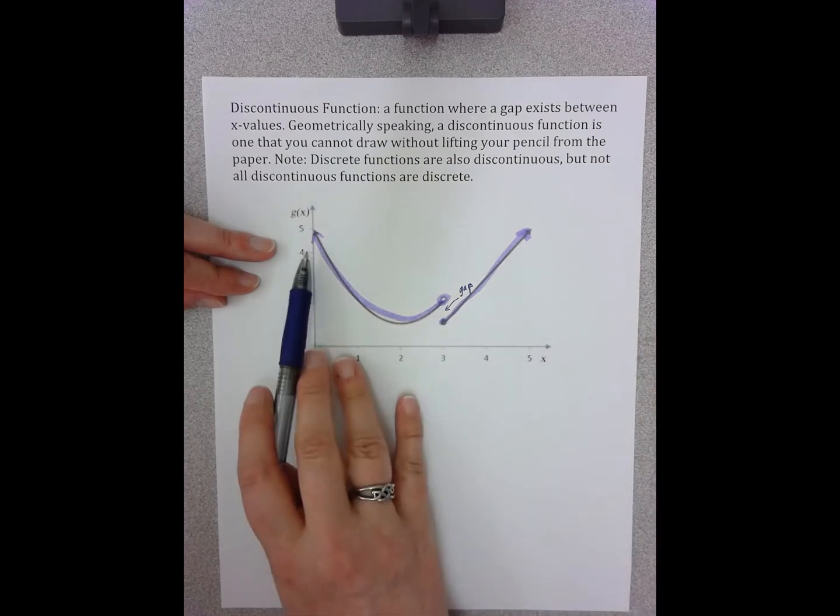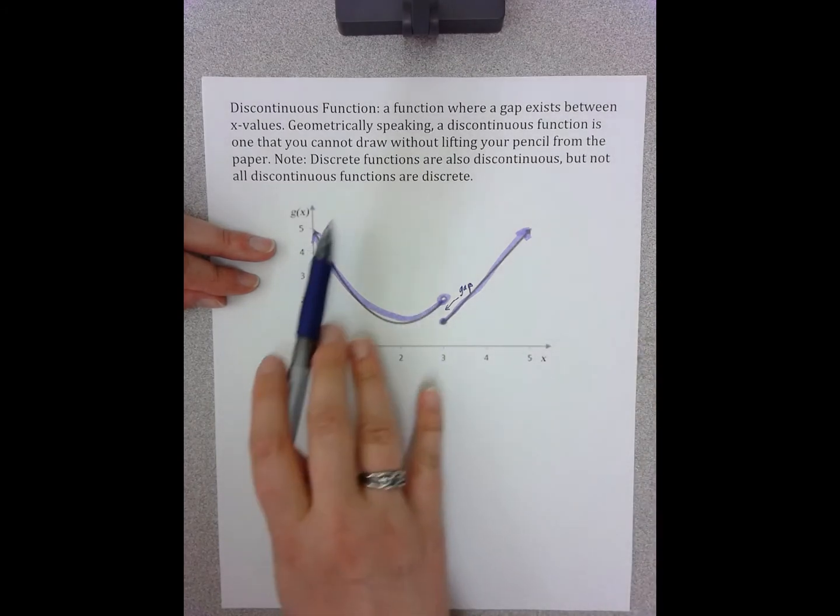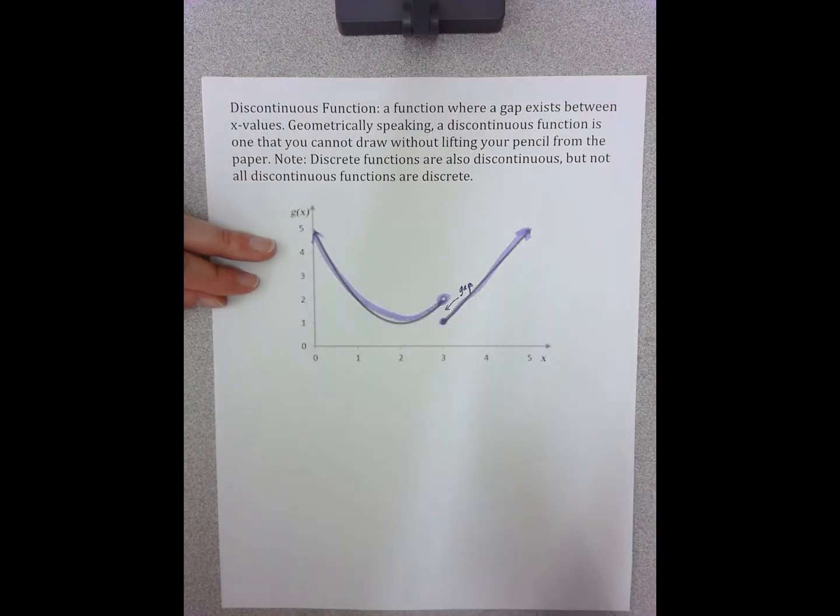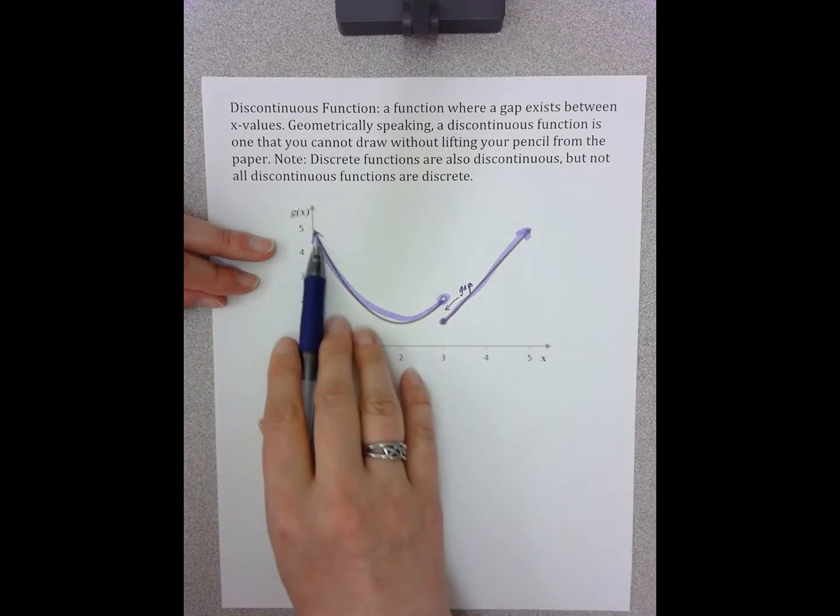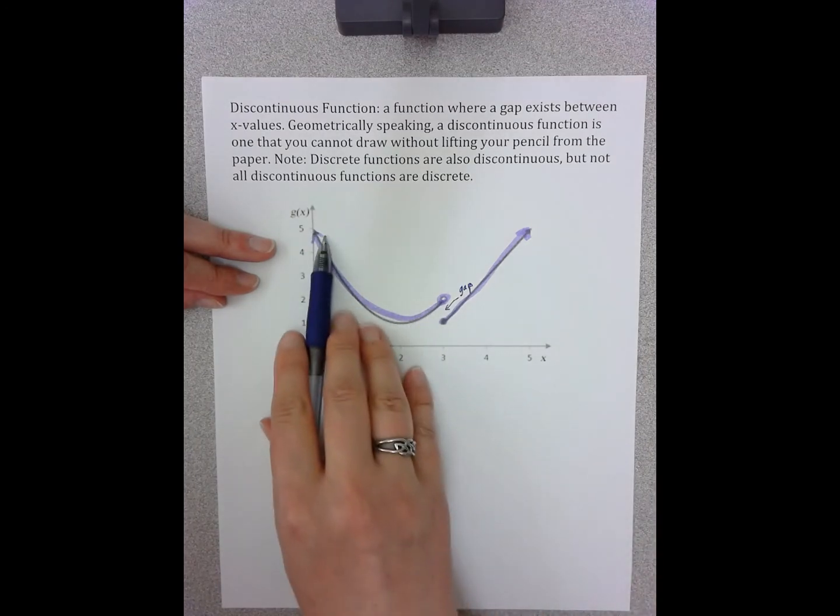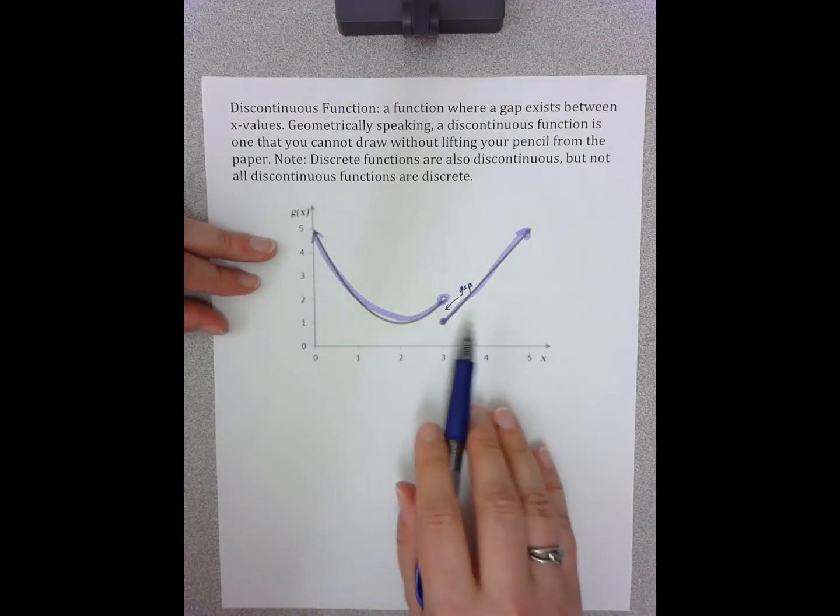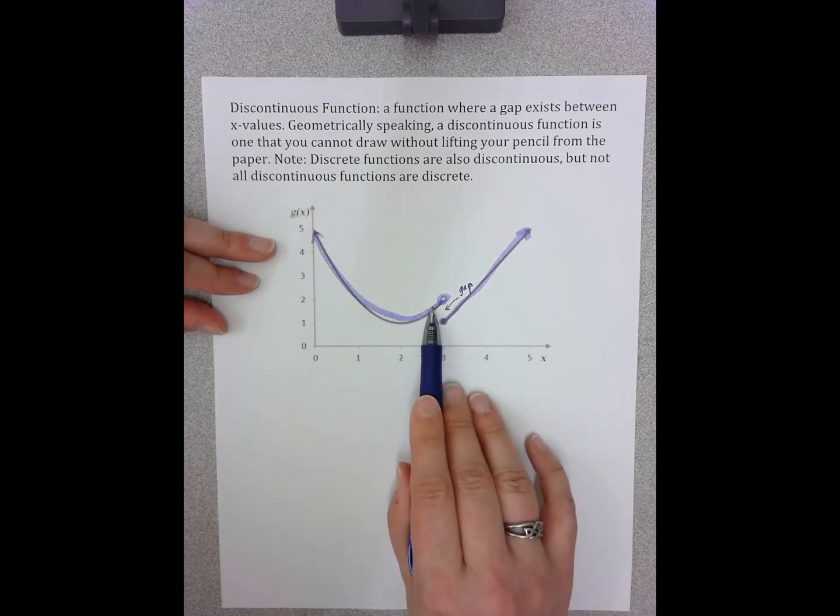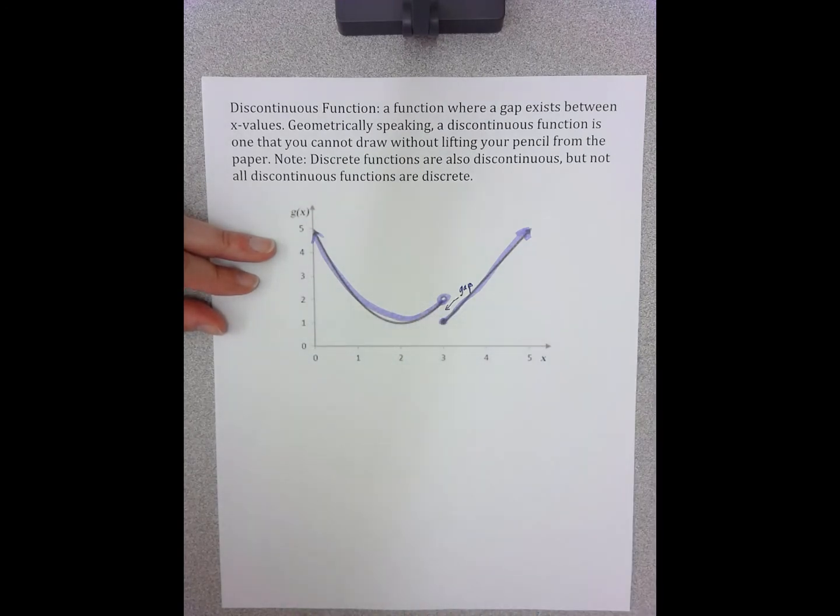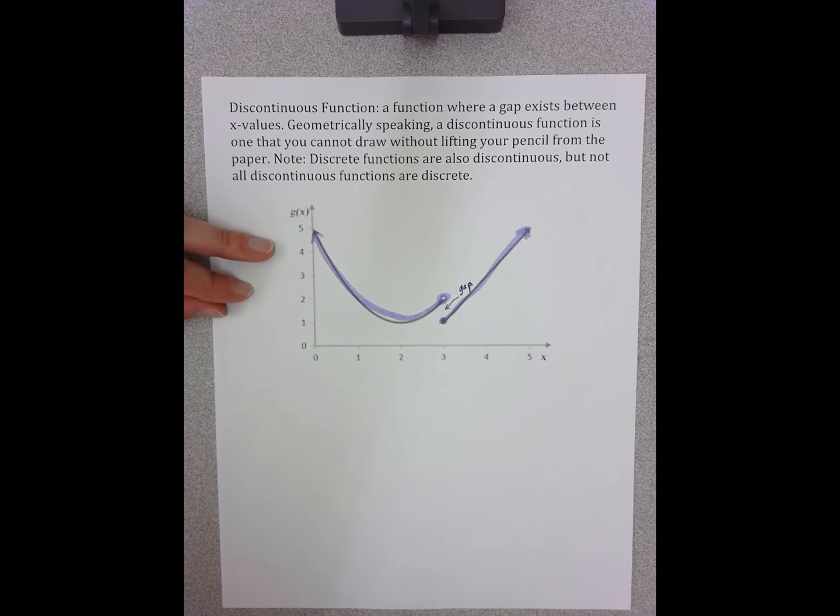This function is not made up of separate individual points on the graph. It is made up of pieces that are continuous. But there are pieces, which means the entire graph is not continuous, so it is discontinuous.